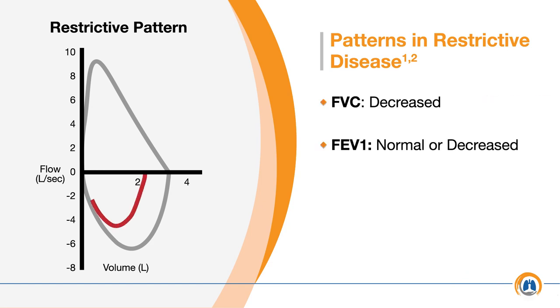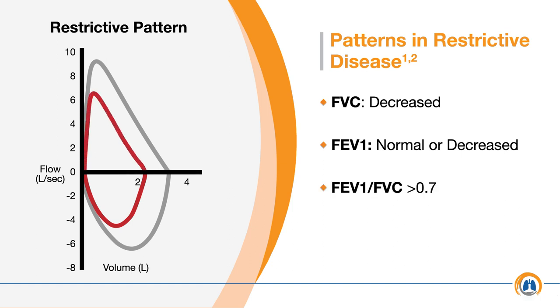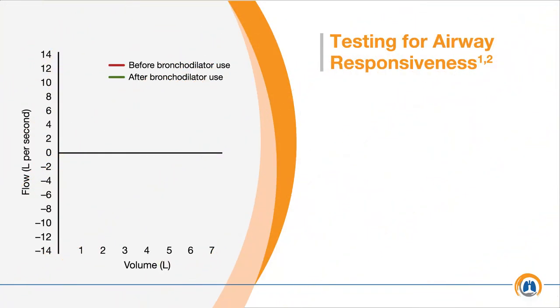In restrictive diseases like IPF or ILD, the FVC value is decreased, the FEV1 value may be normal or decreased, and the FEV1 to FVC ratio is greater than 0.7.